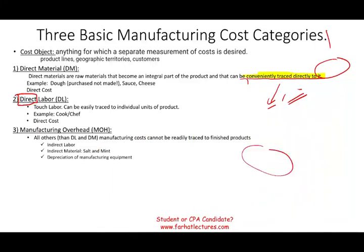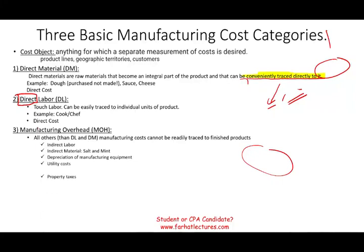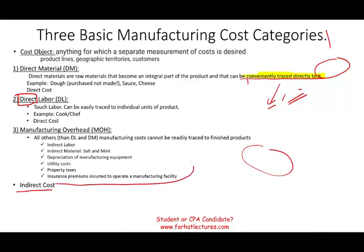We could have many other manufacturing overhead items. Depreciation of manufacturing equipment — be careful, because on the CPA exam they try to trick you. Depreciation could be manufacturing overhead, or it could be something other than manufacturing overhead. Here, manufacturing overhead includes any depreciation that deals with equipment used in the manufacturing facility — for example, the oven at the pizzeria. Also: utility costs, property taxes on the building, and insurance premiums incurred to operate the manufacturing facility. Manufacturing overhead is considered indirect cost because it cannot be easily traced to the finished goods — so we have to allocate it.